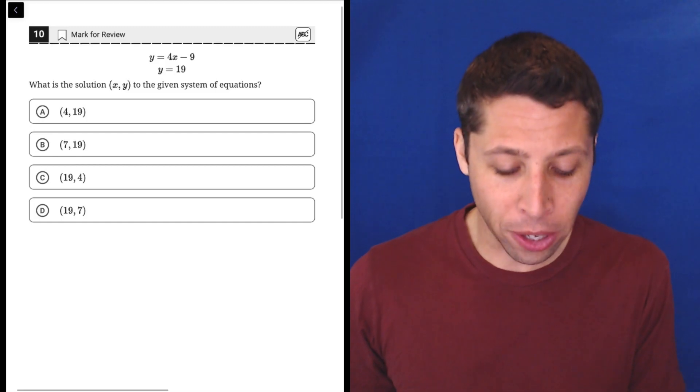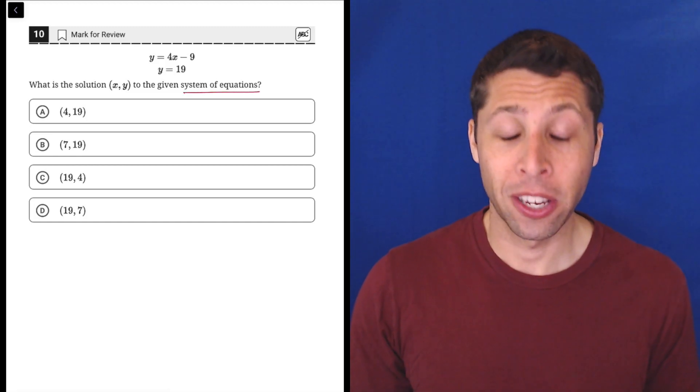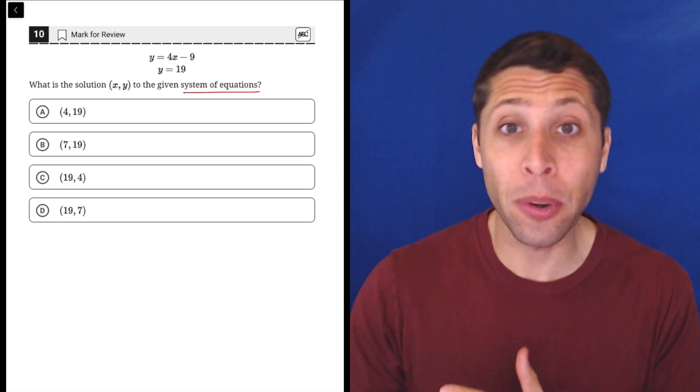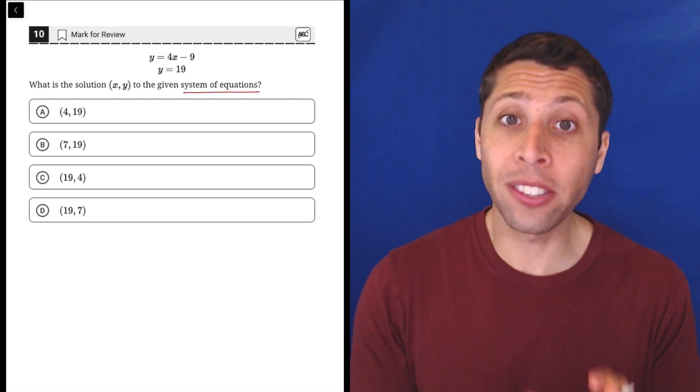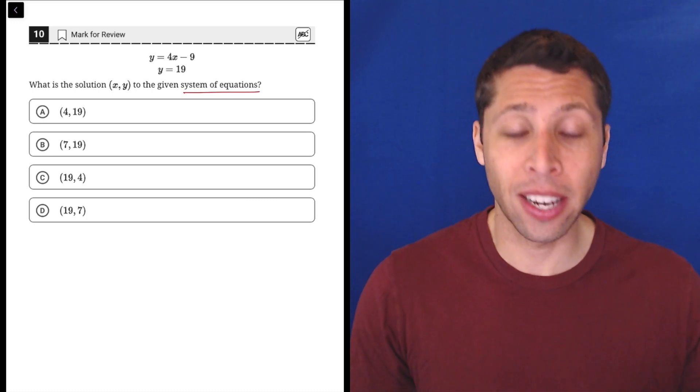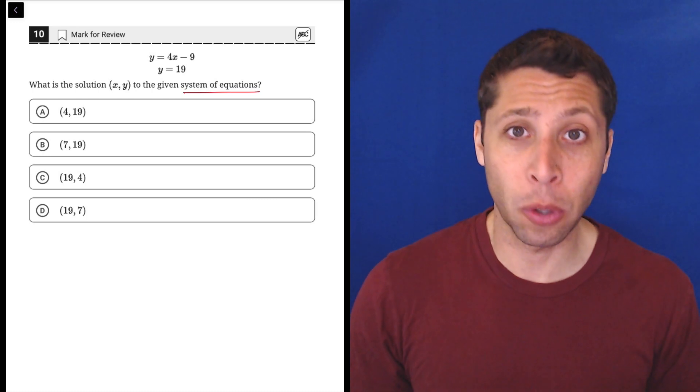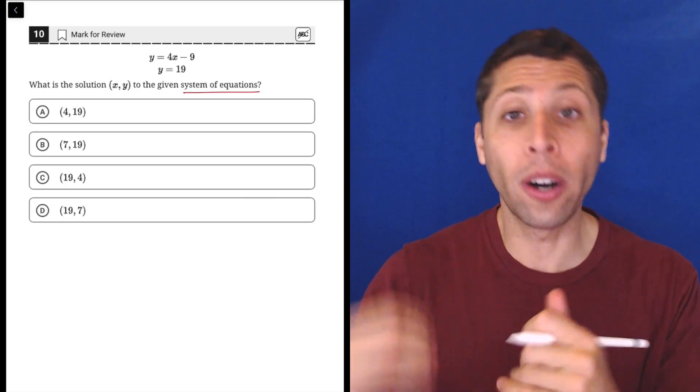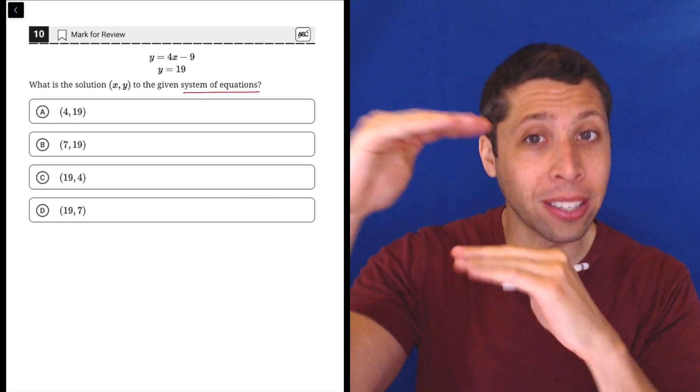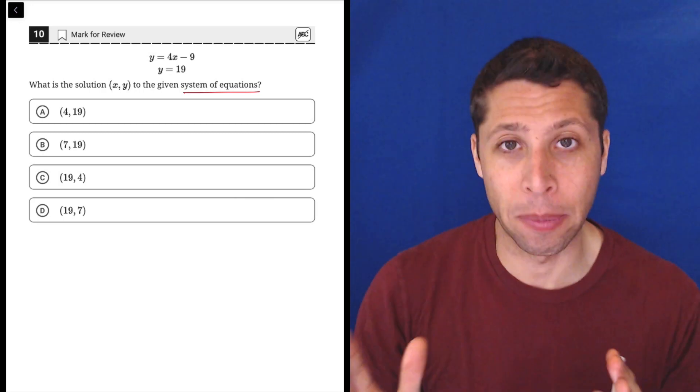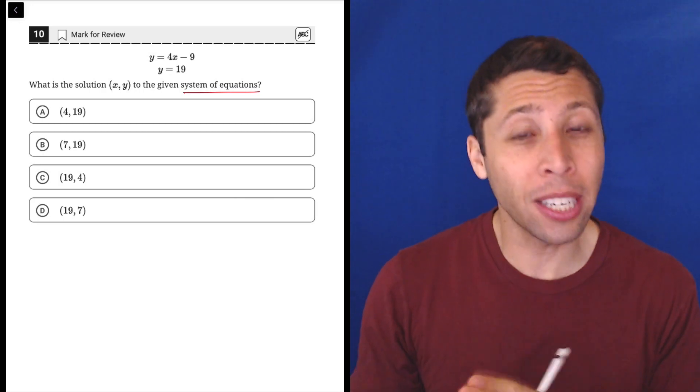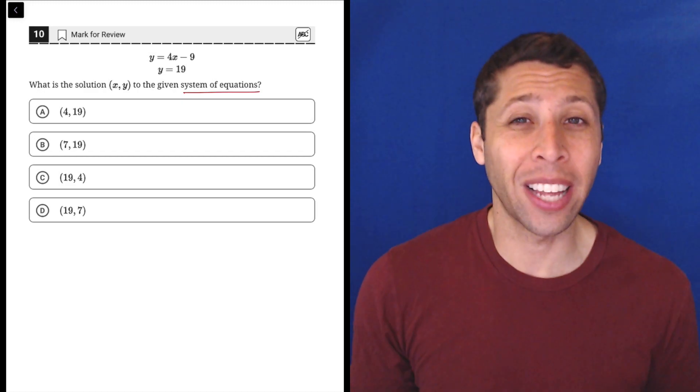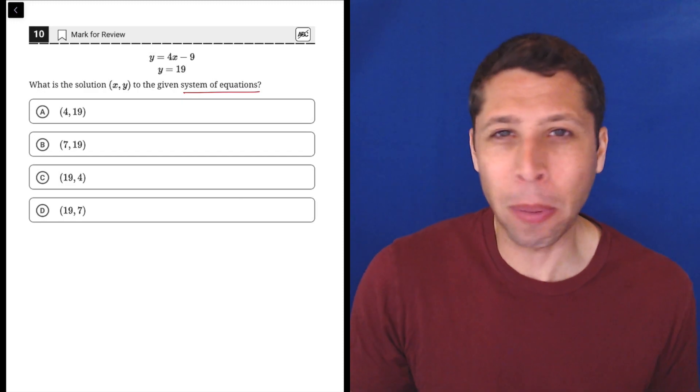On the digital SAT, when we are asked about systems of equations, we are very rarely going to solve these in the same way that you would in school. Solving systems of equations often involves substituting one equation in for another or using a process called elimination. Neither of those is really as useful on the current SAT because we have the calculator or we have a situation like this where one of the equations is barely an equation at all.